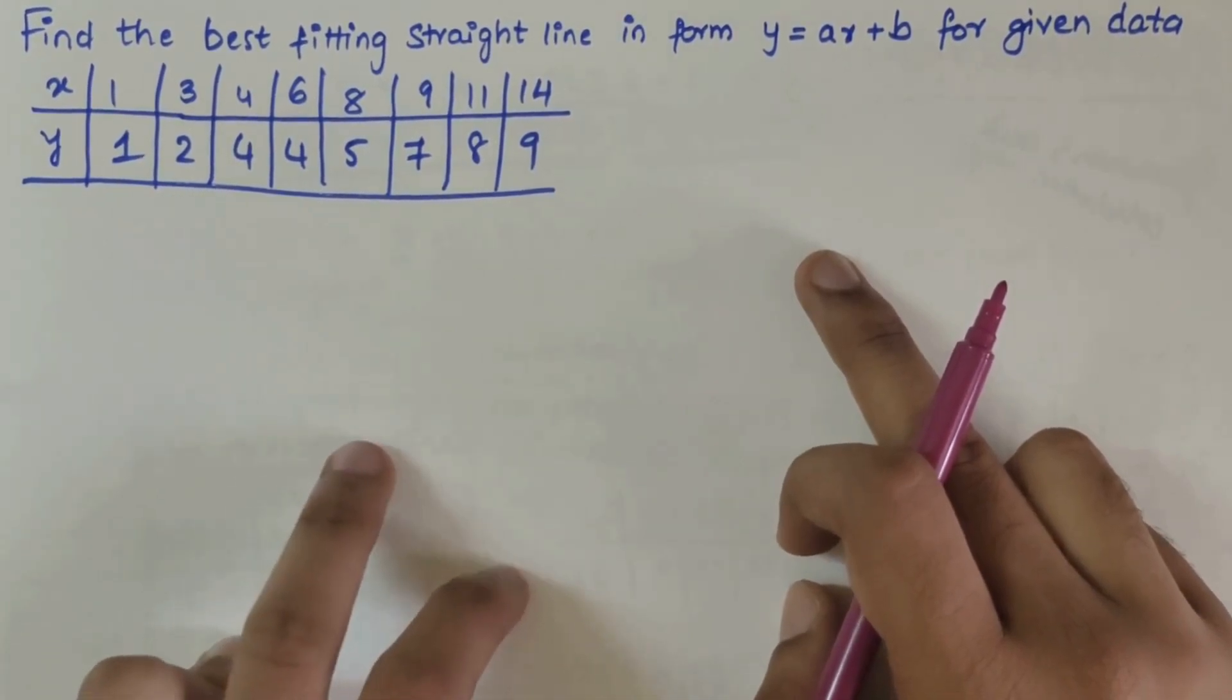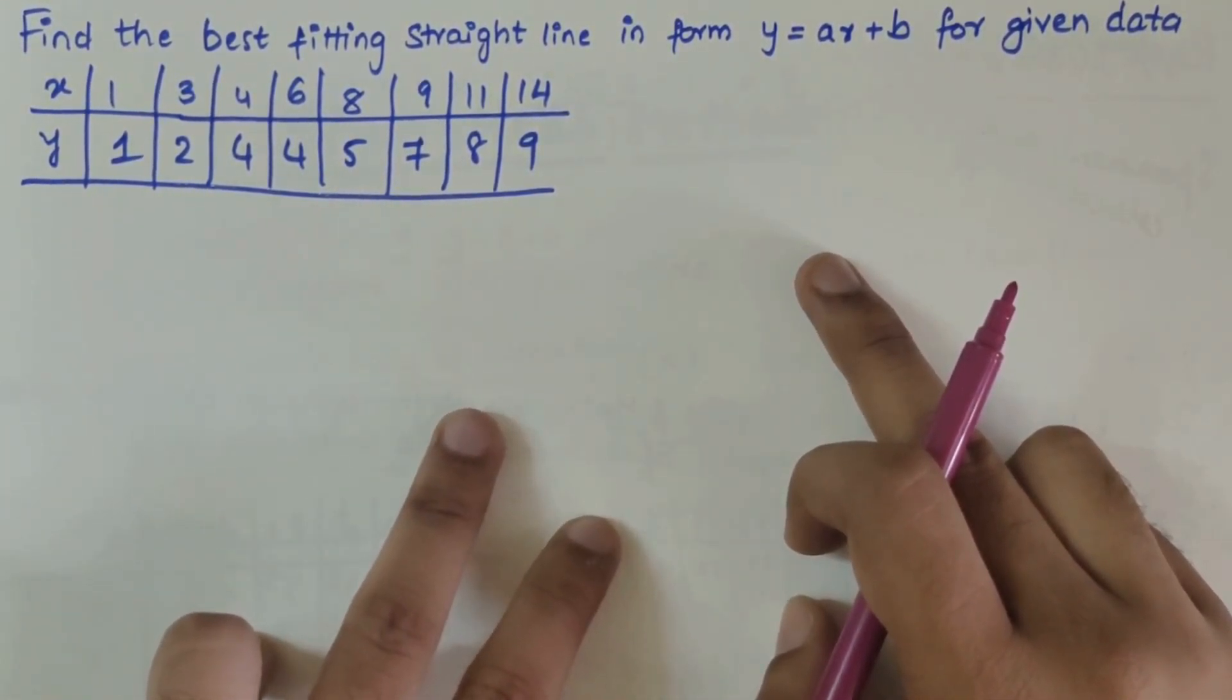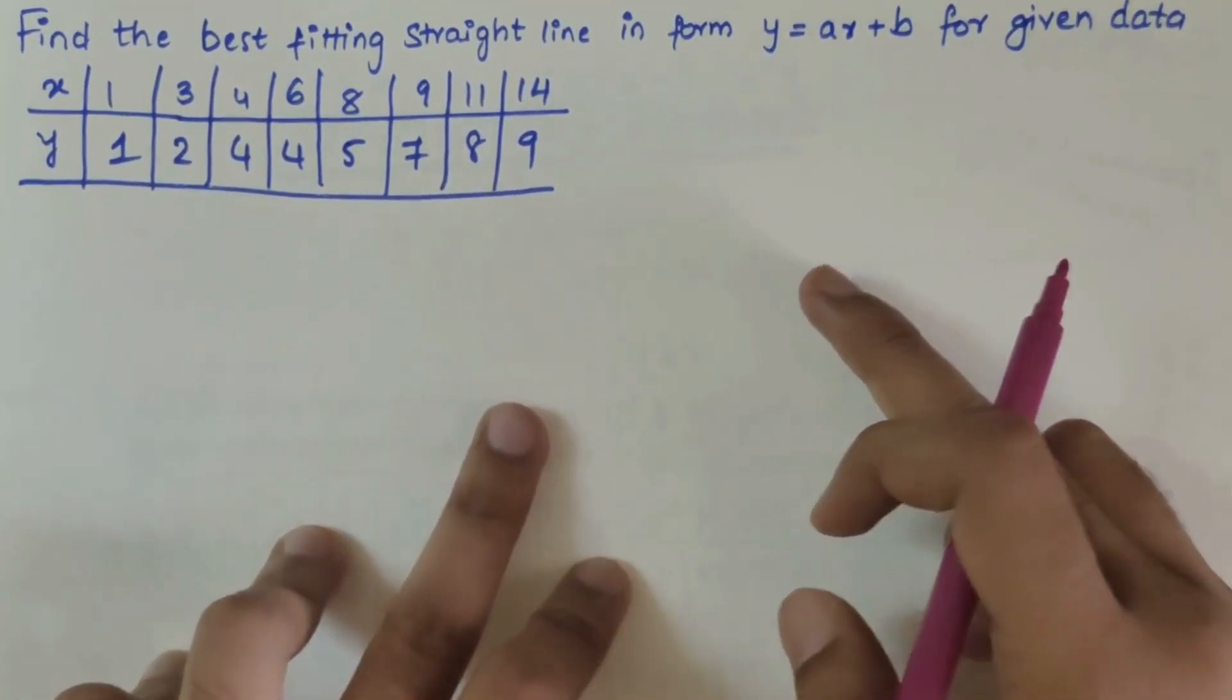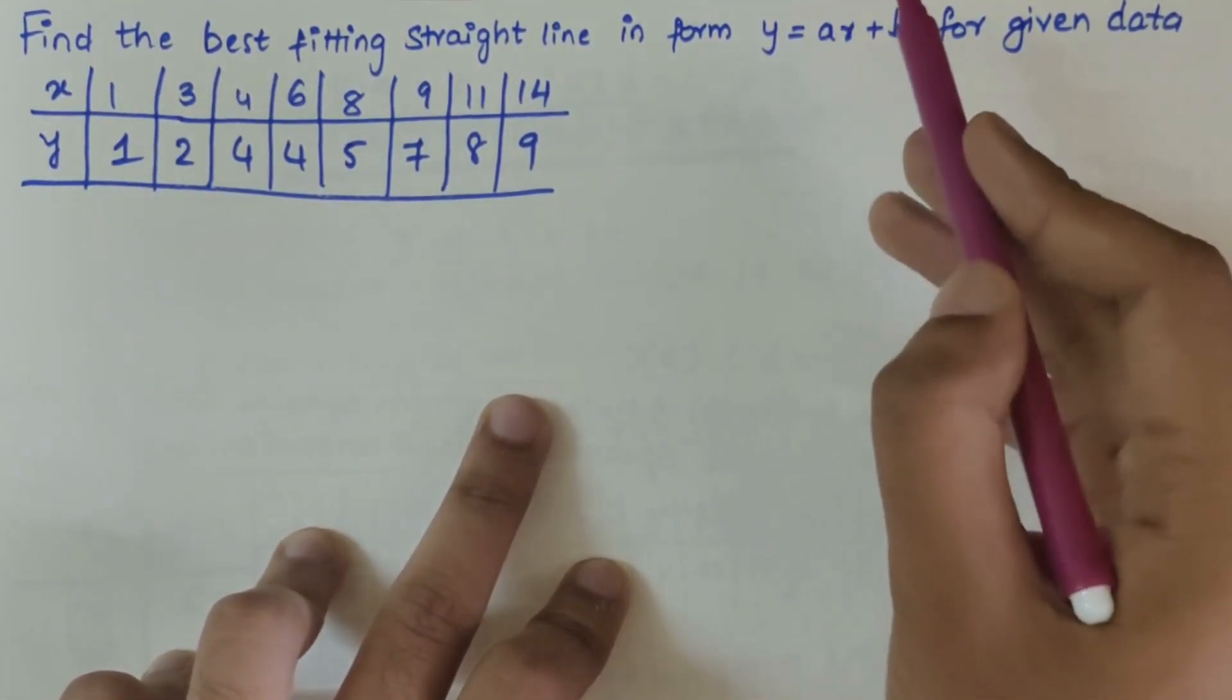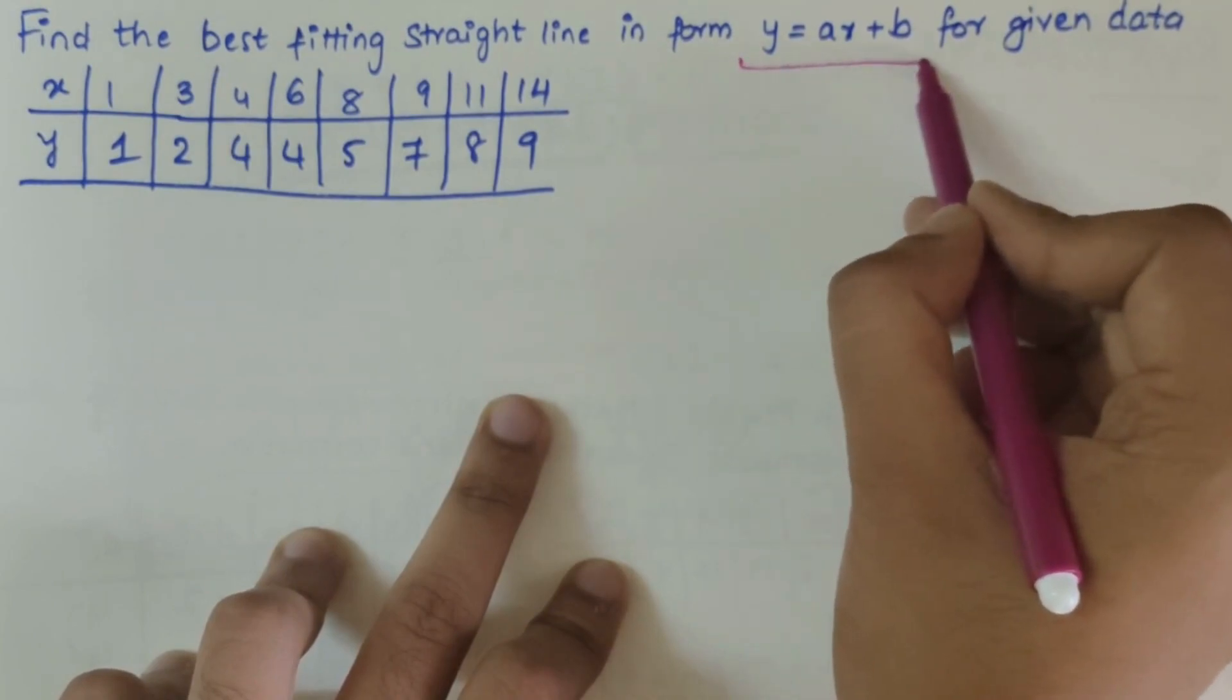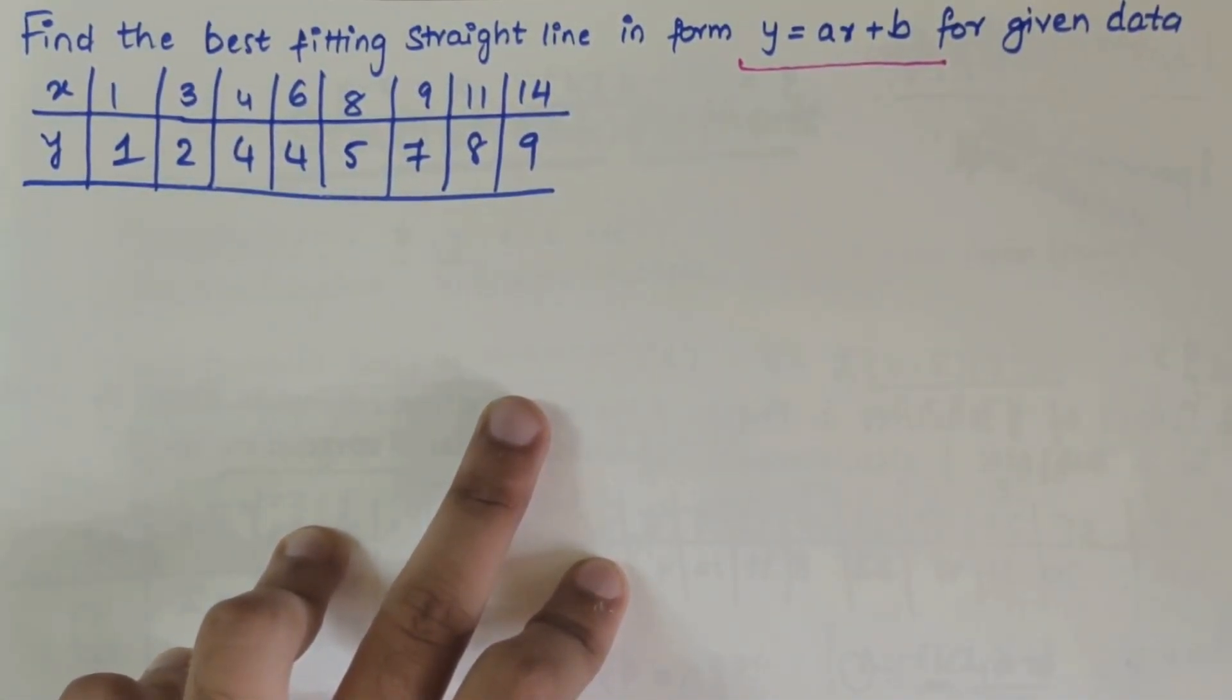In this video we will be solving the curve fitting question for a straight line. The question is to find the best fitting straight line in the form y equals ax plus b. This is the equation for the given data.